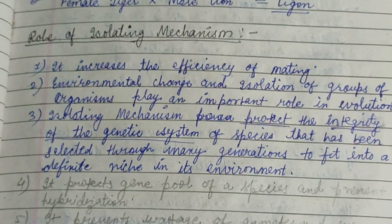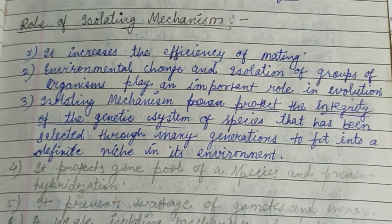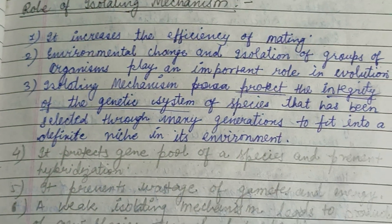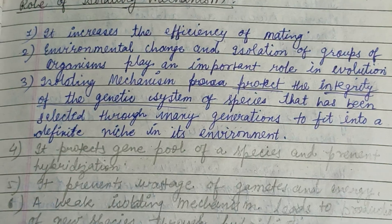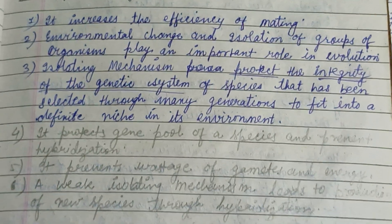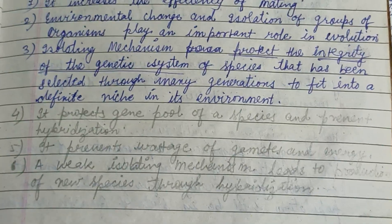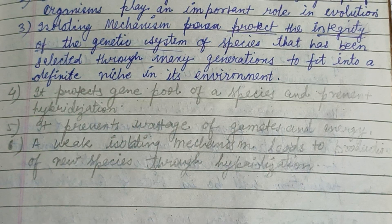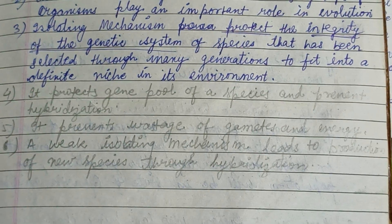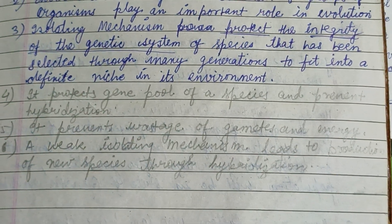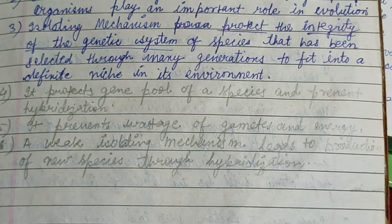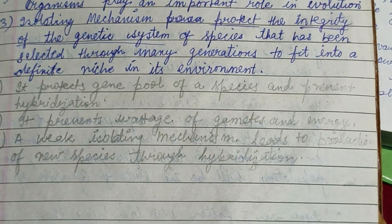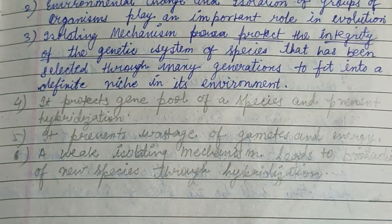The role of the isolating mechanism: it increases the efficiency of mating, it protects the integrity of the genetic system of the species, it protects the gene pool of the species and prevents hybridization, it prevents wastage of gametes and energy, and a weak isolating mechanism can promote new species through hybridization.